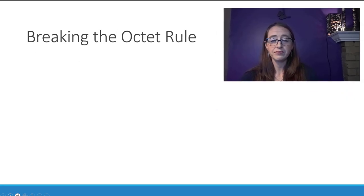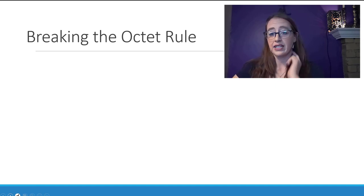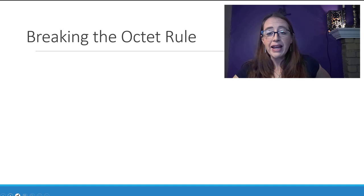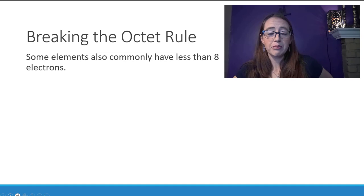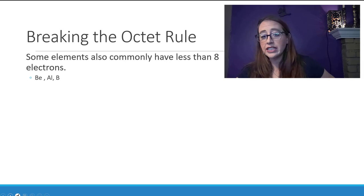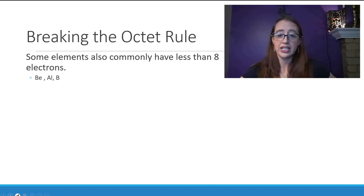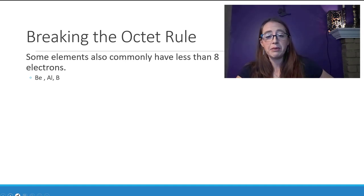There are two ways that atoms can break the octet rule. The first is by having fewer than eight electrons. The common ones that do this are beryllium, aluminum, and boron, because these have two and three valence electrons. If they did have a full octet they'd actually carry a formal charge. This is okay and sometimes that happens, but there is also stability in having a zero formal charge even if that means not having eight electrons.